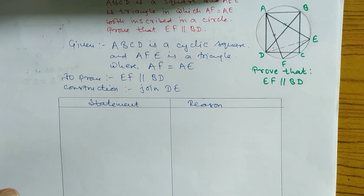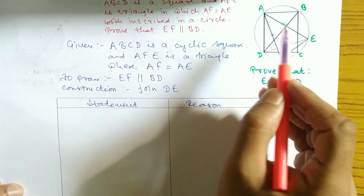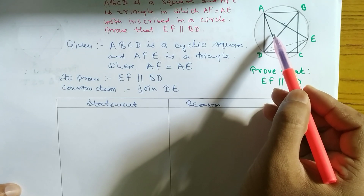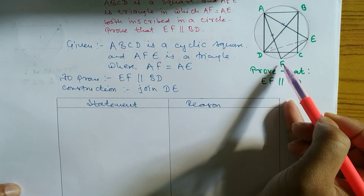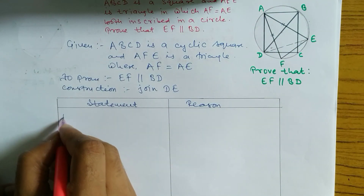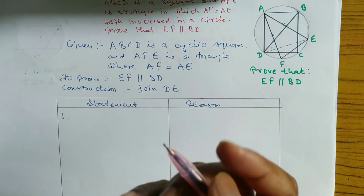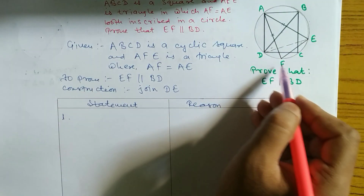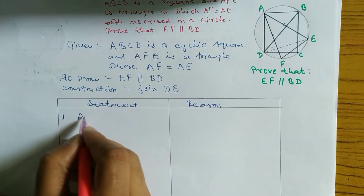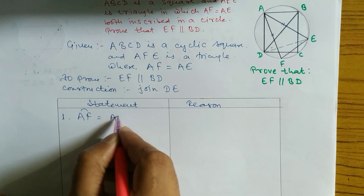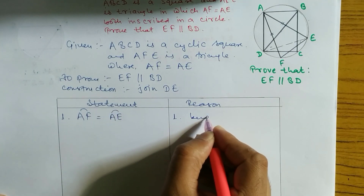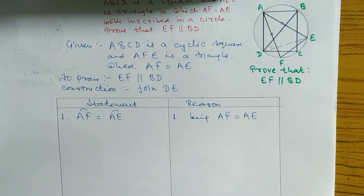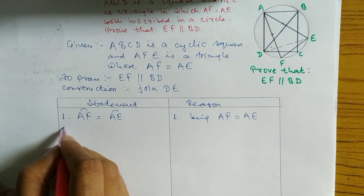Now, AF and AE are both equal sides. When two sides are equal, the arcs they subtend are also equal. So in statement one: arc AF is equal to arc AE, because the chords AF and AE are equal. Equal sides mean equal arcs. This is step one.